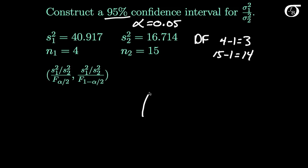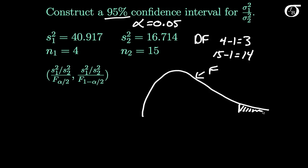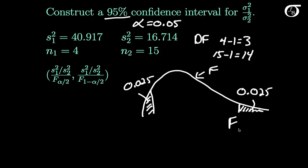Now we're going to draw out an F curve — this is an F distribution with these degrees of freedom. Over here somewhere is a value of F that yields an area to the right of alpha over 2, which is going to be 0.025, simply 0.05 over 2. Over here somewhere is another value of F that yields an area to the left of 0.025. We're going to call this value of F, F.025 — the F value with 0.025 to the right.